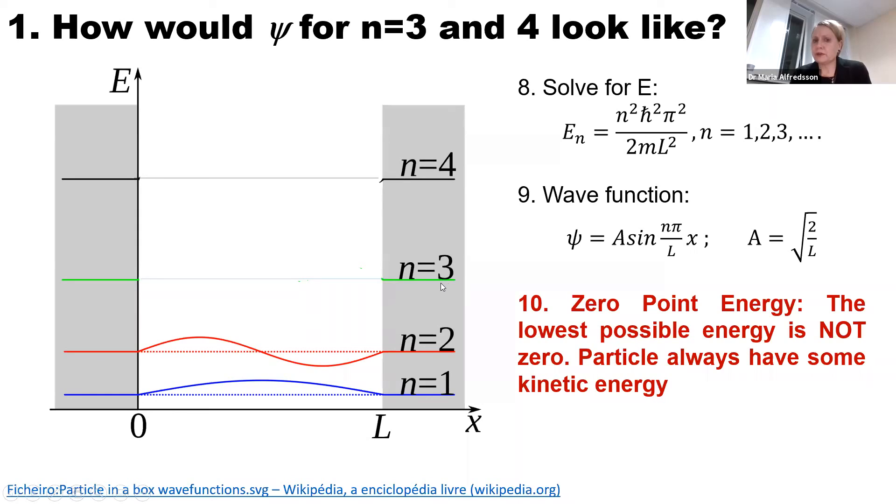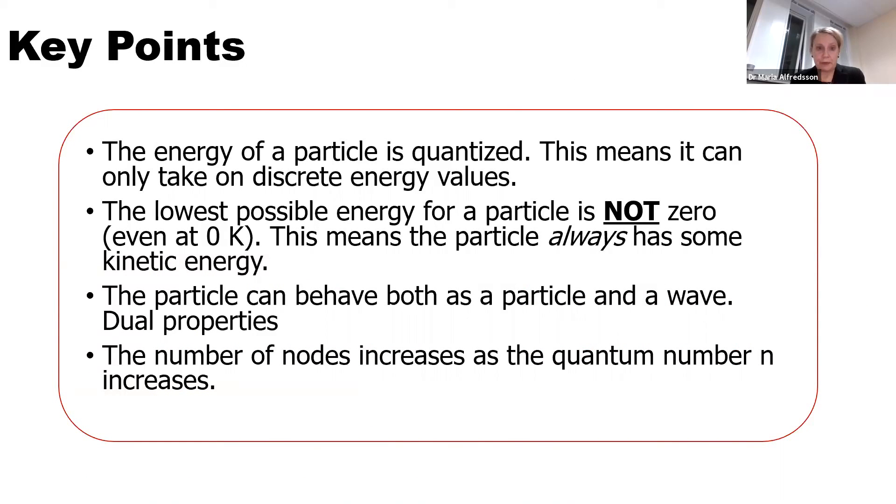How many nodes do you think n equals three and n equals four has? What we find is that n equals three has two nodes: one, two. Four has one, two, three nodes. So the number of nodes are one less than the quantum number. That was something that can be useful to remember.